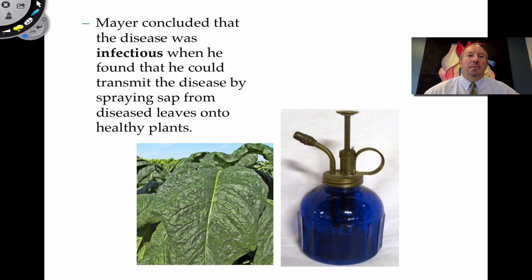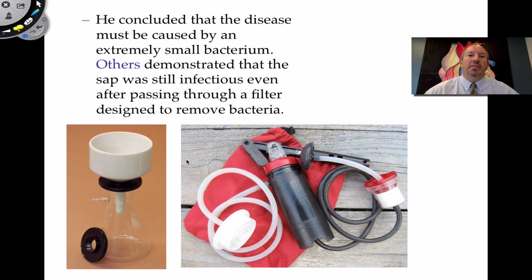So the search is on. Now what is it? So Mayer concluded that the disease was infectious. And what infectious means is that it is transmitted. In other words, you could take sap, for example, from an infected tobacco leaf and sort of grind it up, mix it with water, and then spray it on subsequent leaves on other plants and it would cause healthy plants to catch tobacco mosaic disease. And so it was infectious. That's interesting. And then he concluded that the disease must be some kind of really, really small organism, like a very small bacterium.